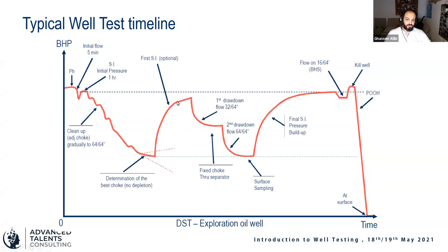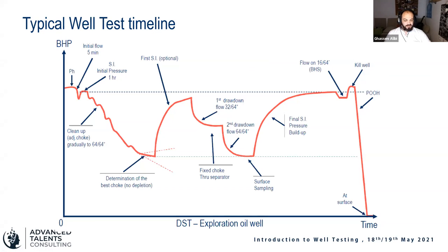In the buildup graph we can see two segments — one relating to the wellbore storage effect, which is how much fluid is compressed in the column before the choke manifold, and then we see stabilization. After that we do multiple tests, following the program given by the client to meet the test objectives. This can be multiple chokes determined by the production capability or prior simulations. So we flow at the first choke — first drawdown — then the second drawdown, and finally the last buildup.